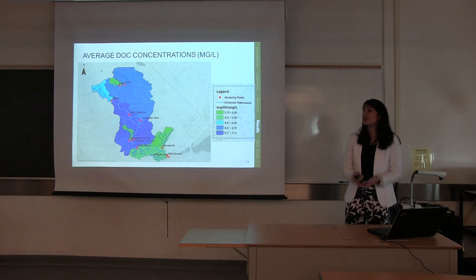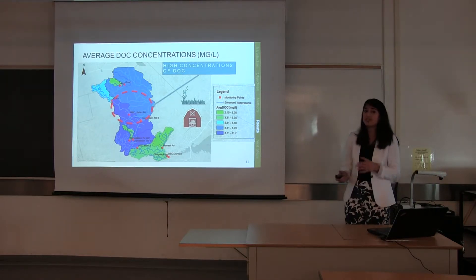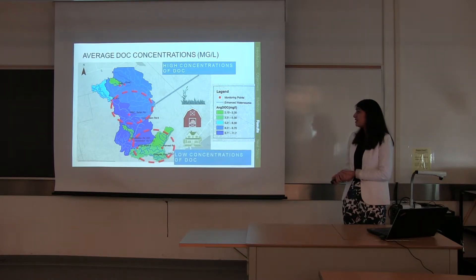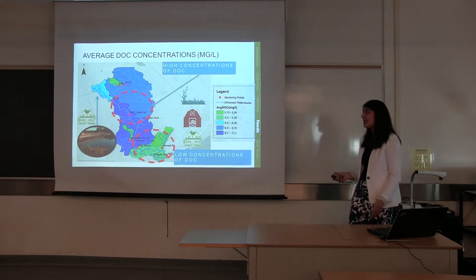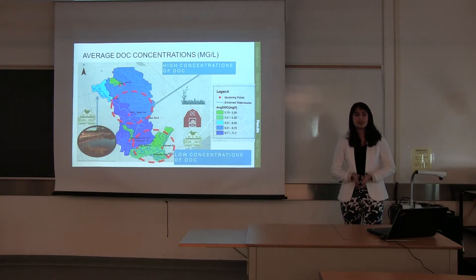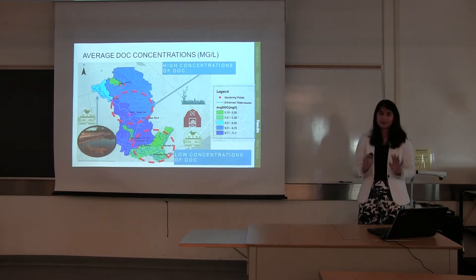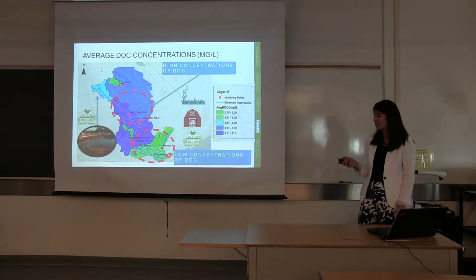Three important findings: high concentrations of DOC were found in the upper to mid region of the watershed, and low concentrations were found in more residential areas further downstream. One upstream site actually behaved as a residential site — this is where Valens Conservation Area is located, which has been modified by humans with a constructed lake and newly planted trees.